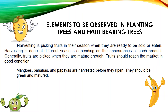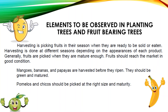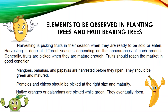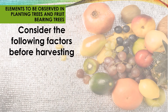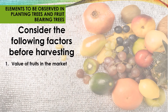Remember that pimela and chicos should be picked at the right size and maturity. Native oranges or dalandans are picked while green — they eventually ripen. Now consider the following factors before harvesting: number one, the value of fruits in the market — is it expensive or cheap these days?